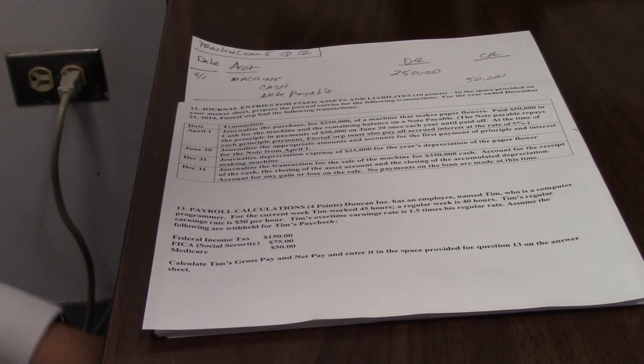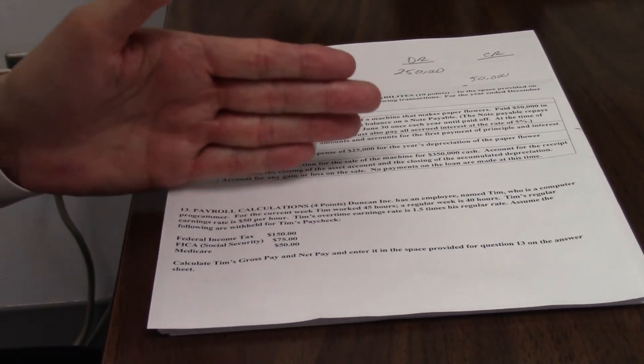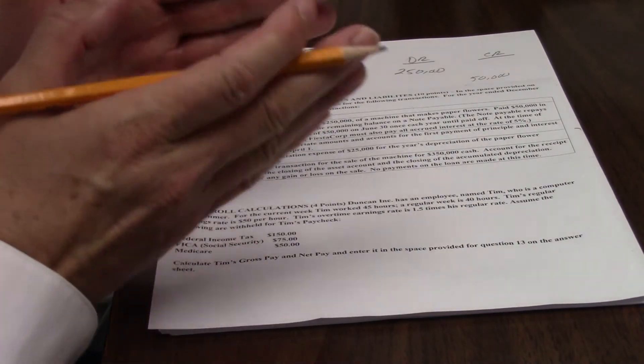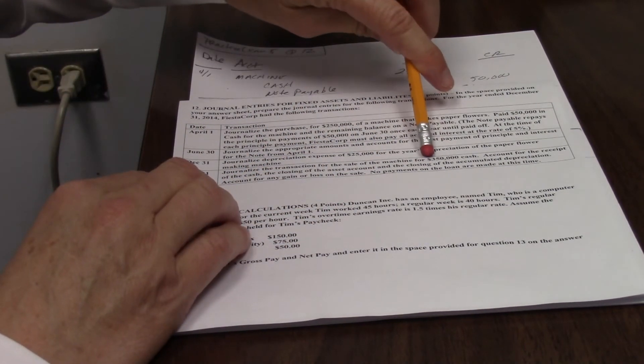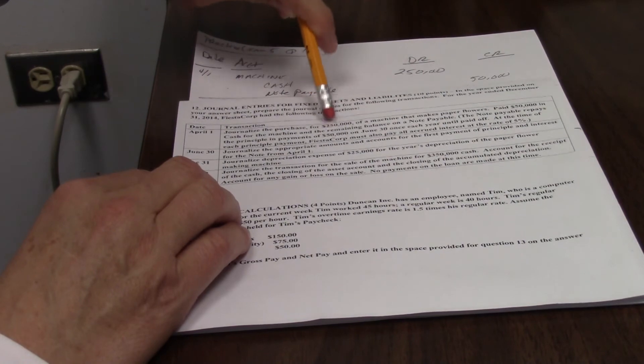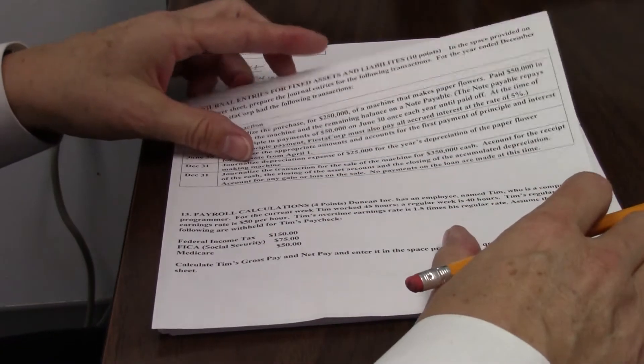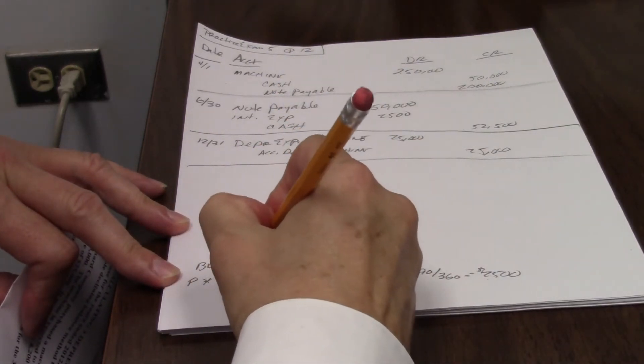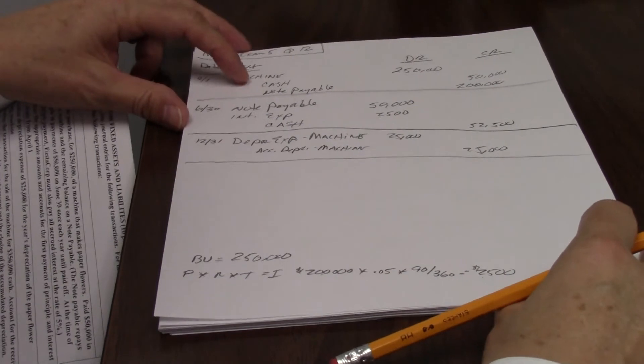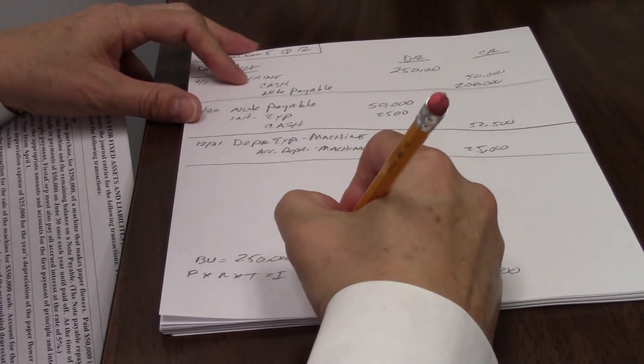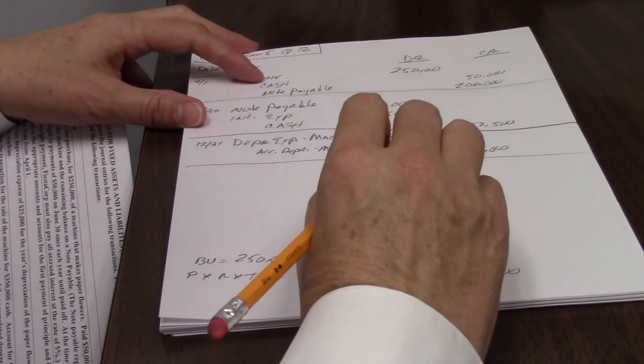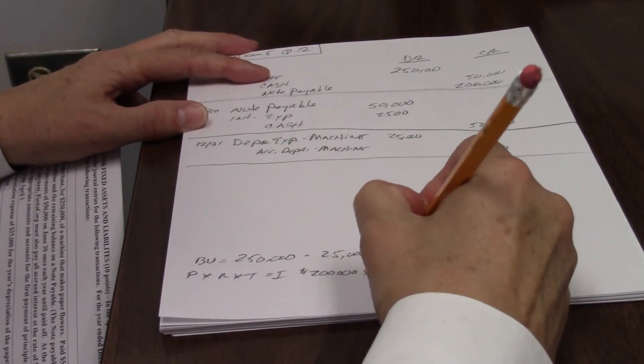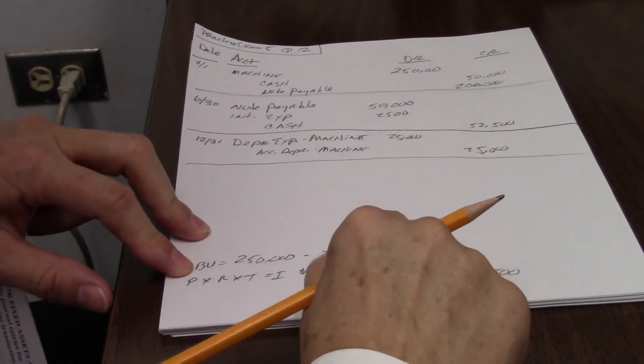So we need to figure out if there's a gain or loss on the sale, which means we need to know what we have it on the books for. A gain or a loss is always the difference between the sales price of the machine and the book value. In this case, we know that it's a gain because we're getting $350,000 and we only paid $250,000. So the book value has to be less than that. Book value of that machine is the $250,000 cost minus the depreciation, which is $25,000. So I end up with that being $225,000. That's the book value of that machine.